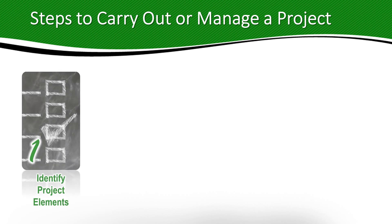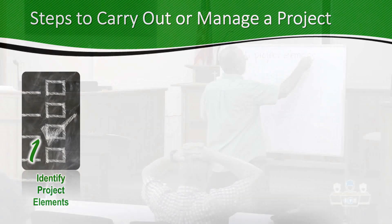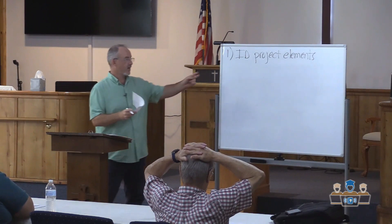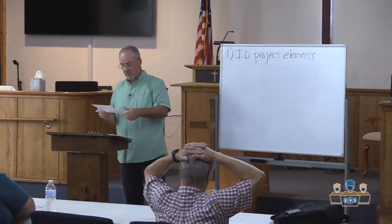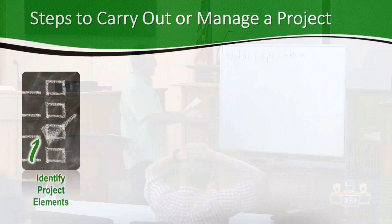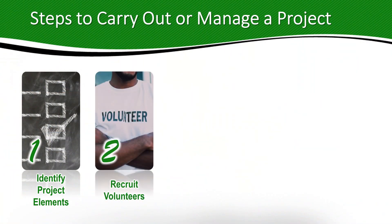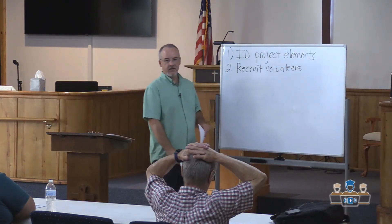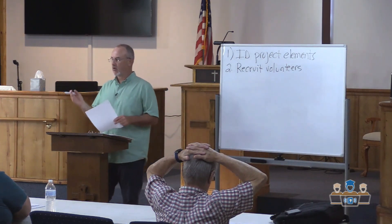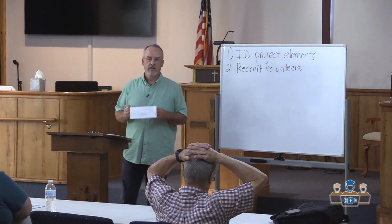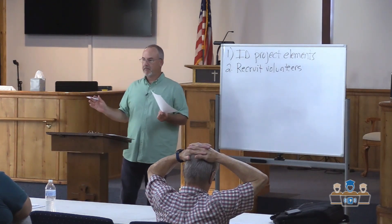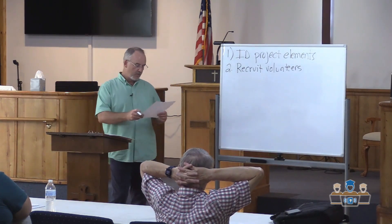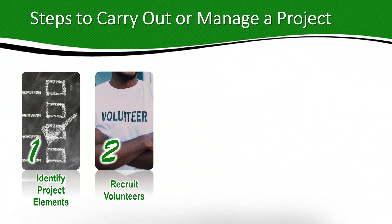Let me identify the five steps. Number one is identify the project elements — scope, time frame, and so on. The second thing you have to do is recruit volunteers. Some projects might be small enough where you need just one or two people, but we have to get really good at recruiting volunteers. If you notice in our church, there seem to be 15 or 20 people who each have three or four different jobs, so we've got to get better at recruiting people to help us.